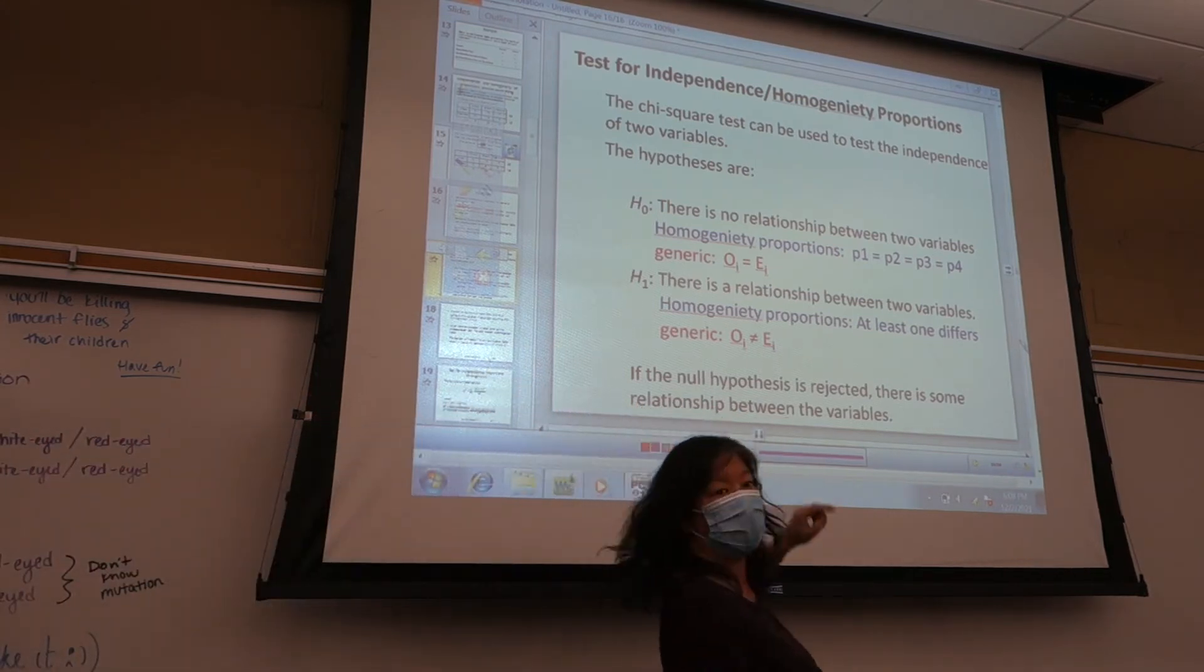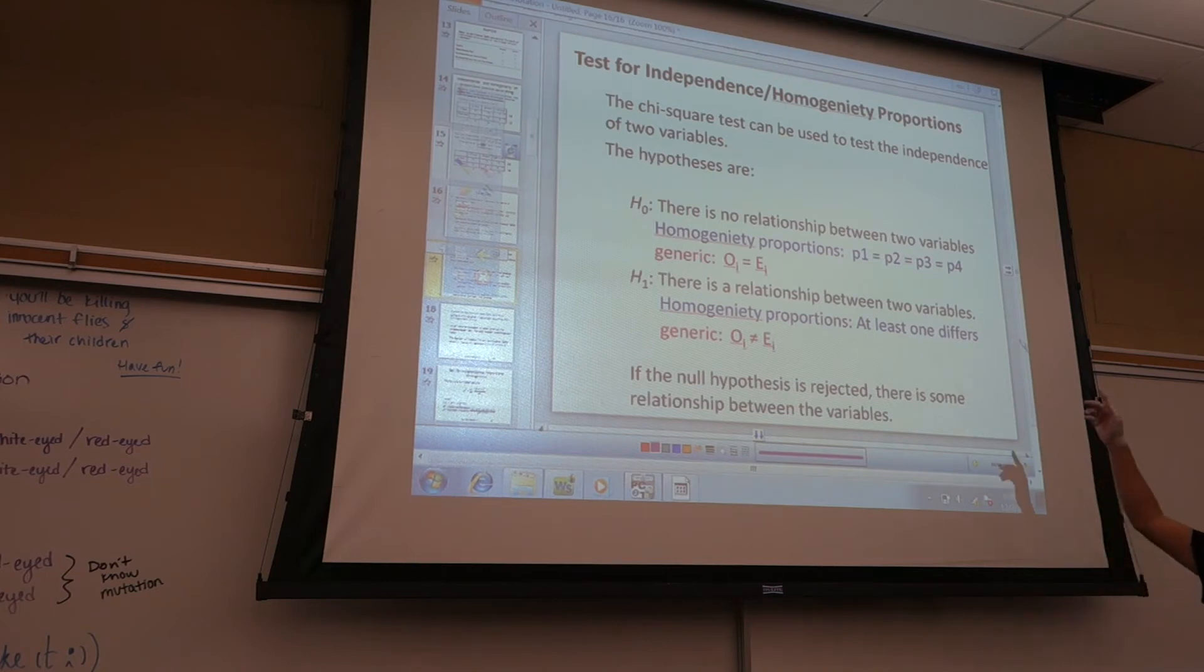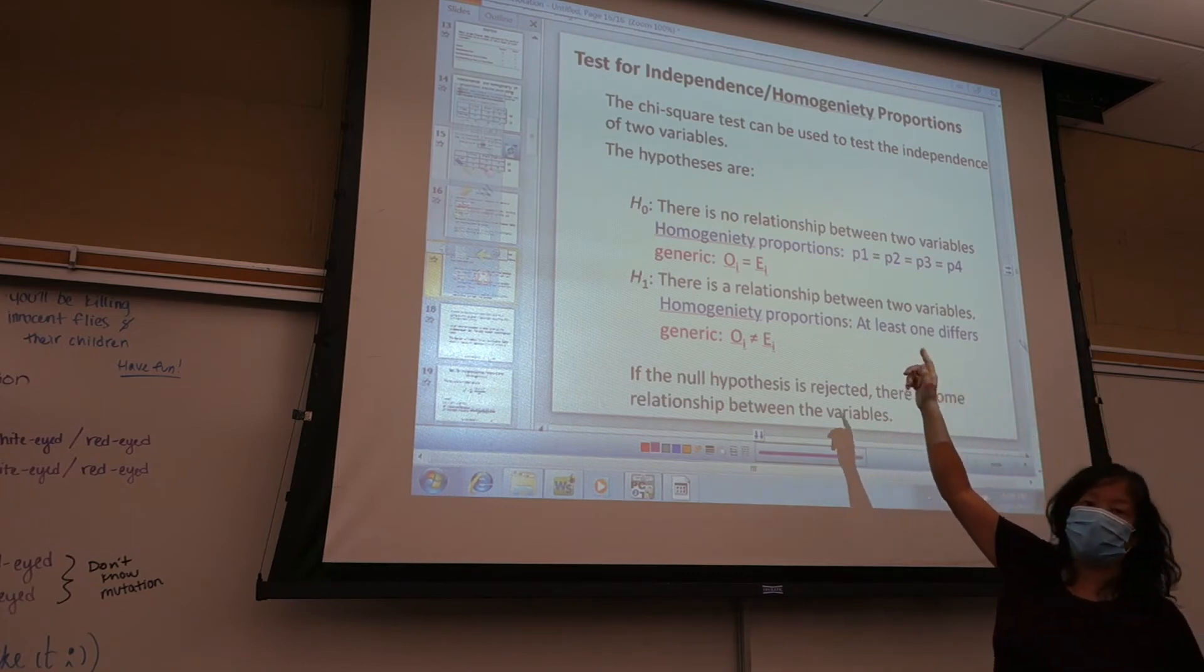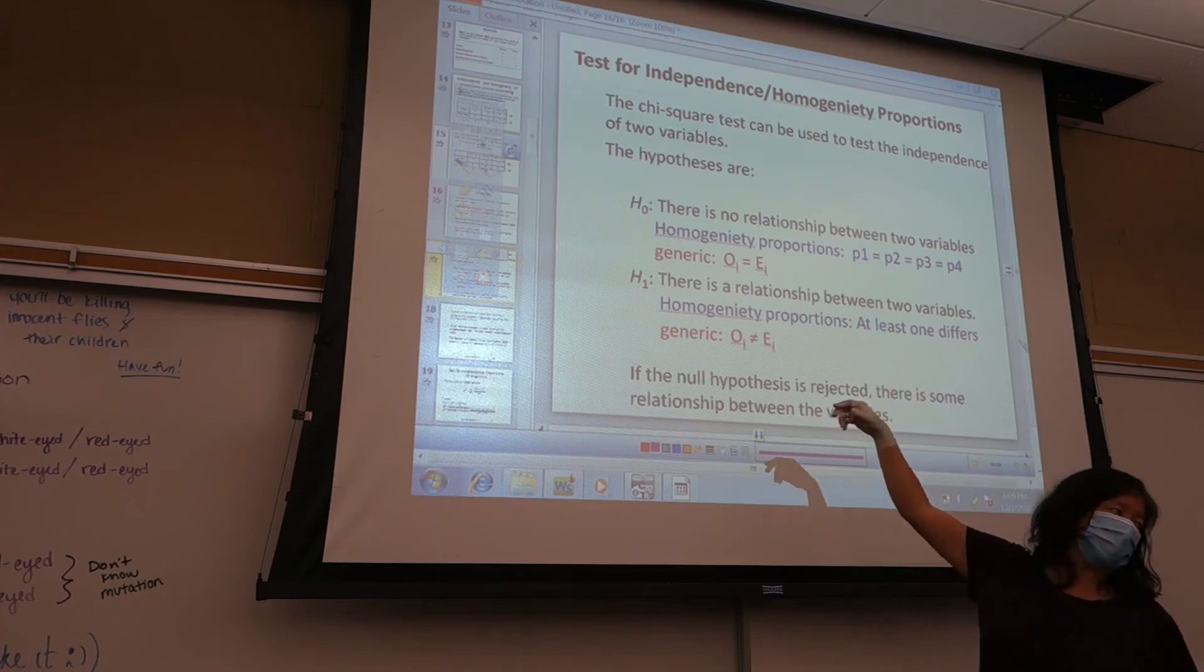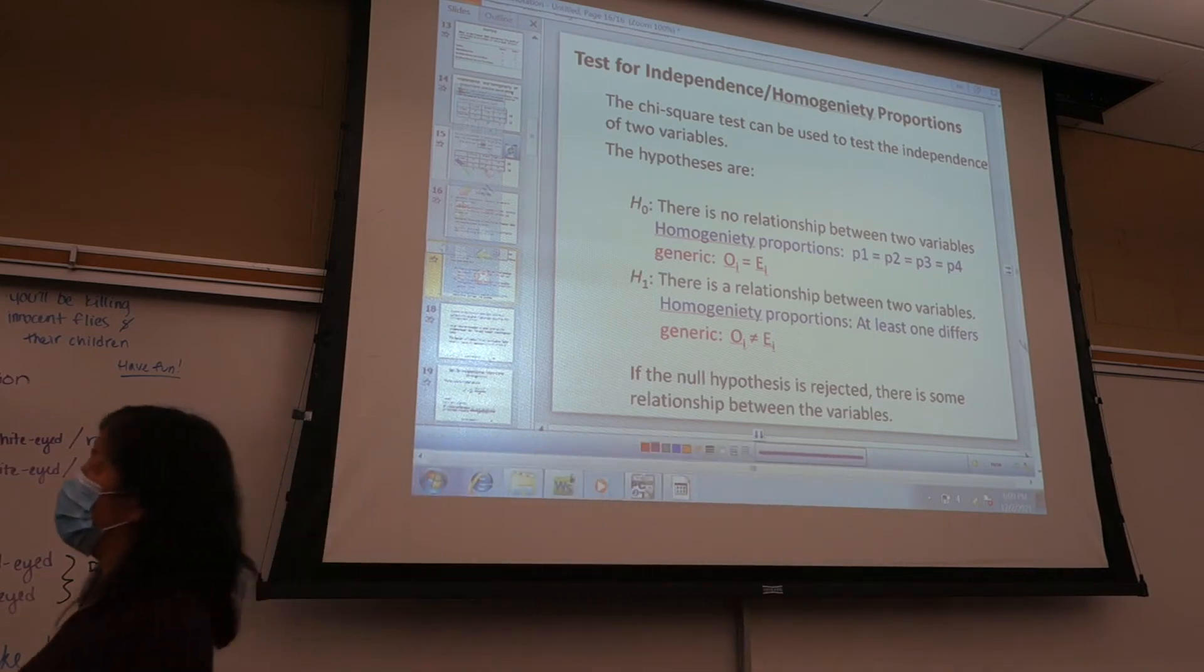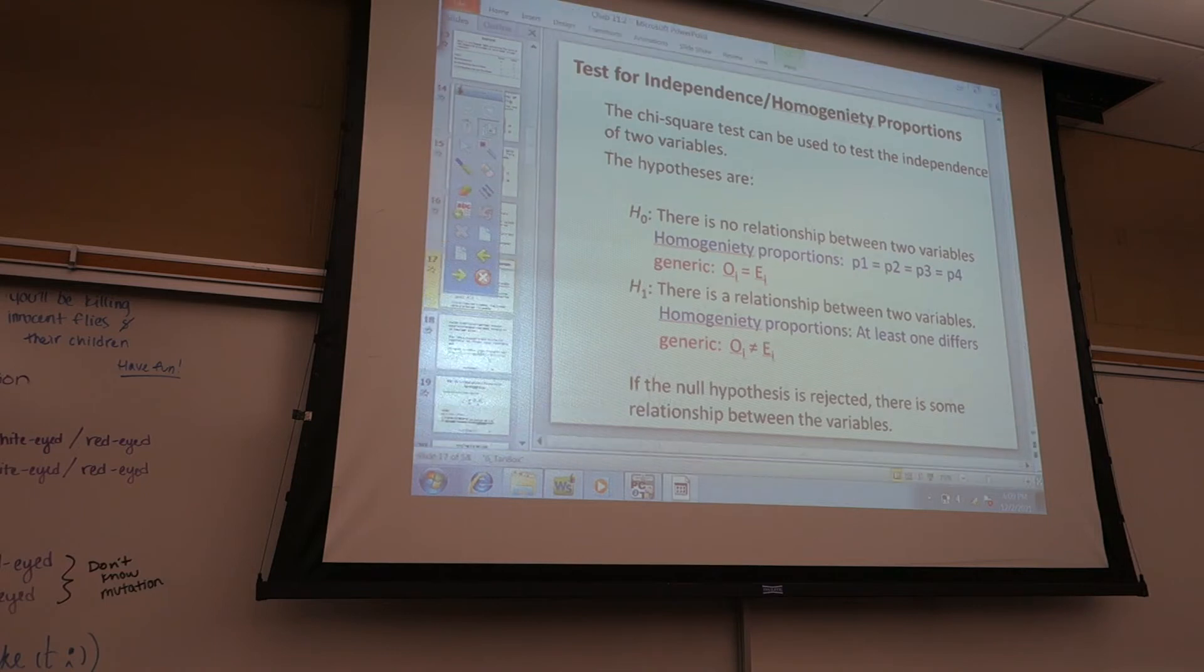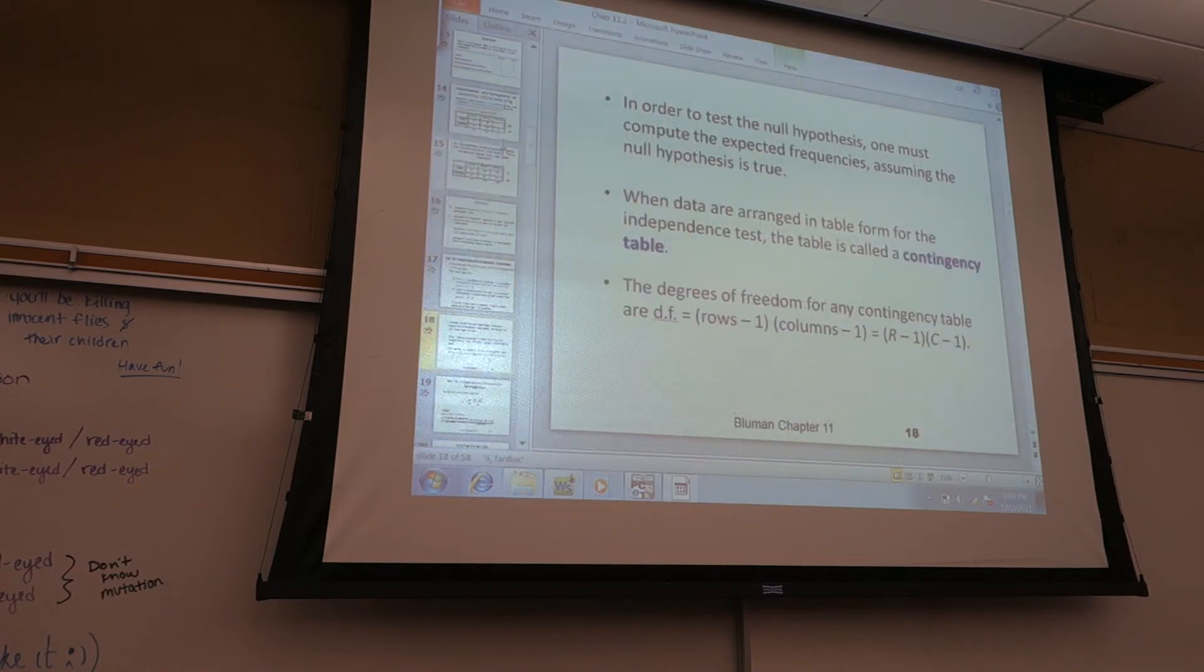H1, Alondra, go ahead and read that one for me. There is a relationship between two variables. Homogeneity of proportions, at least one differs. Generic, O of i not equal to E of i. So, depending on what you picked, you can use any one of those for your H naught, and depending on which one you picked for your H naught, you should pick the matching one for your H1. If there's no relationship for H naught, then H1 would be there is a relationship. If H naught says that the proportions are all equal, then H1 would say that at least one differs. I don't care which one you use, I'm fine with any of them. Just be aware that your homework may want a specific one, possibly.